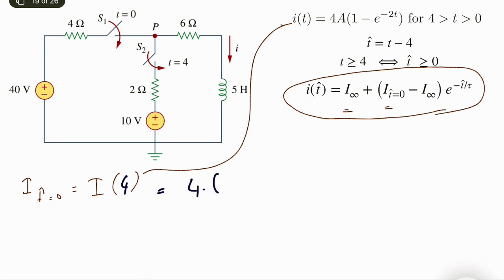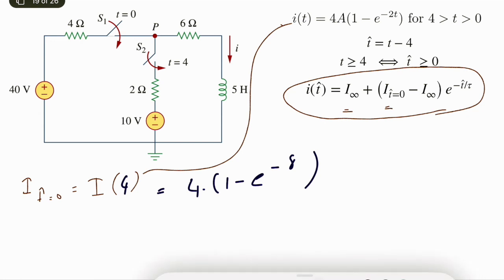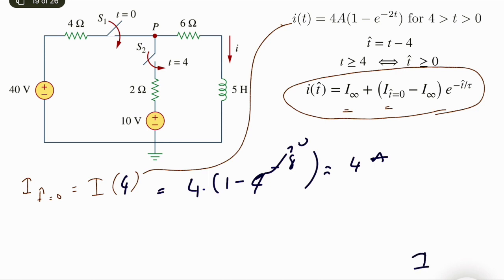i(4) equals 4 times (1 minus e to the power minus 8). e to the power minus 8 is approximately equal to 0, so this is approximately equal to 4 amps. So i at t-hat equals 0 is equal to 4 amps, which is the initial condition of this new circuit.